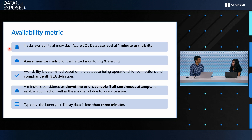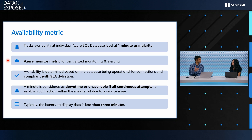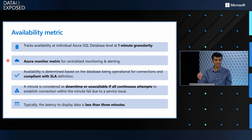And Hyperscale too. It's applicable for Hyperscale, General Purpose, Business Critical, and even all the service tiers in the DTU model. And this is an Azure Monitor metric, meaning right off the bat you get it and can see the metric in Monitor, which means all your existing alerts and any custom monitoring setup in Monitor just works off the bat.